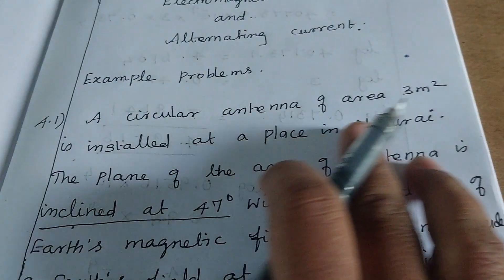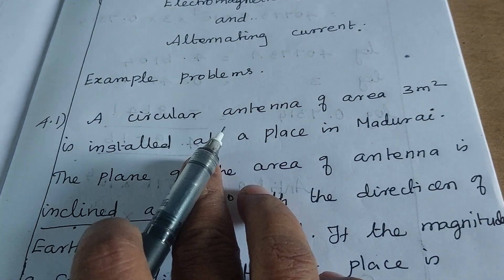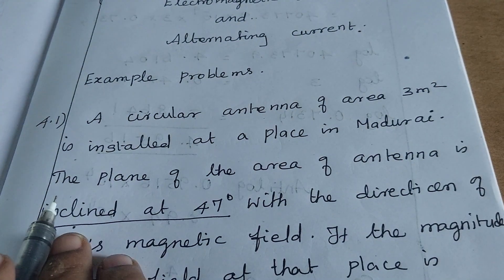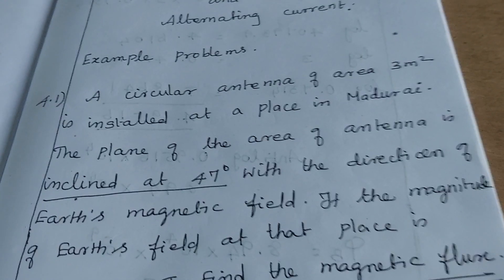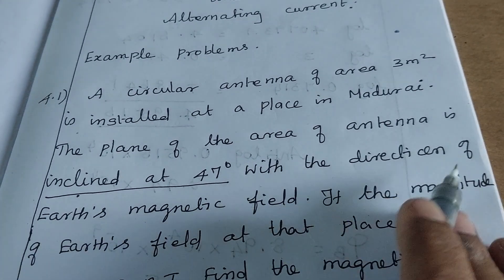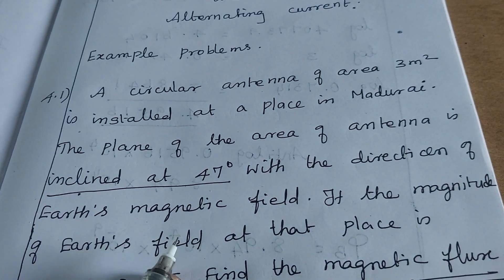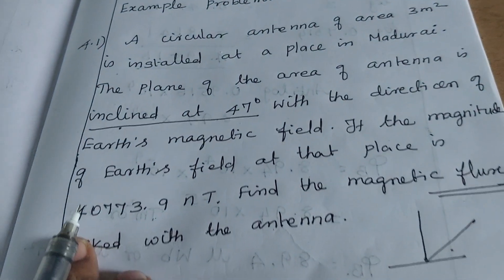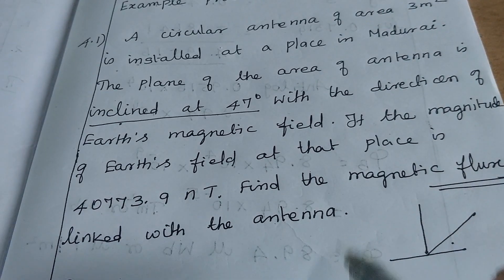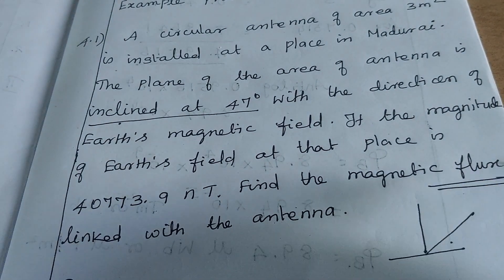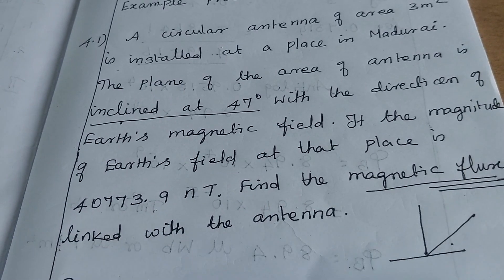A circular antenna of area 3 m² is installed at a place in Madurai. The plane of the area of the antenna is inclined at 47 degrees with the direction of Earth's magnetic field. If the magnitude of Earth's field at the place is 40,773.9 nanotesla, find the magnetic flux linked with the antenna.